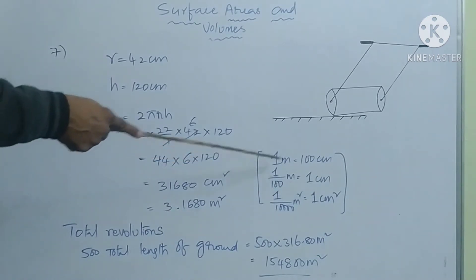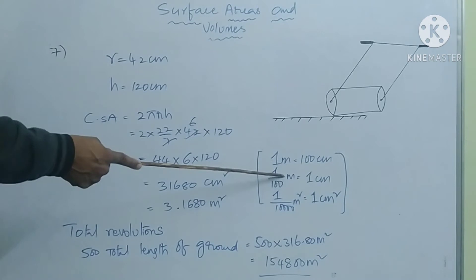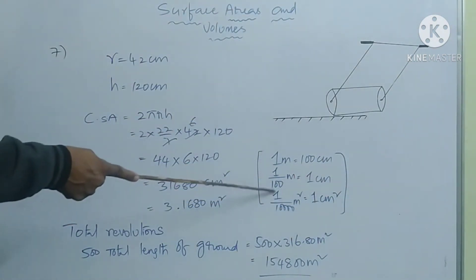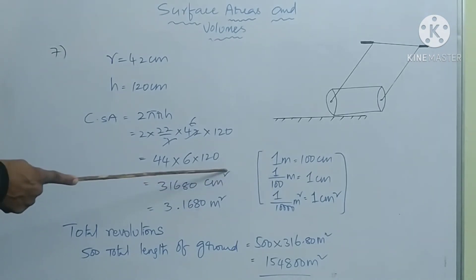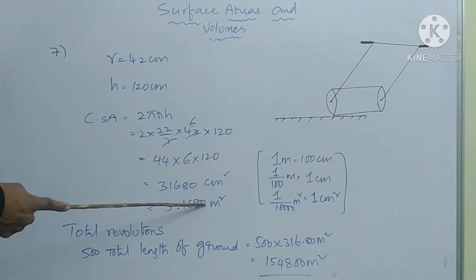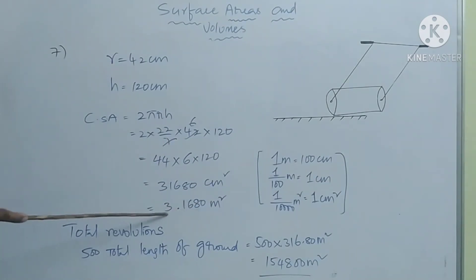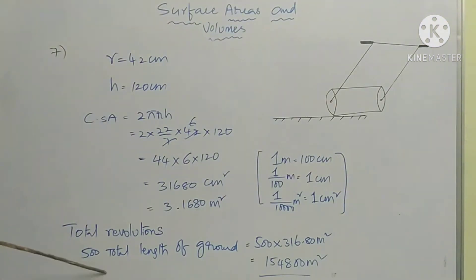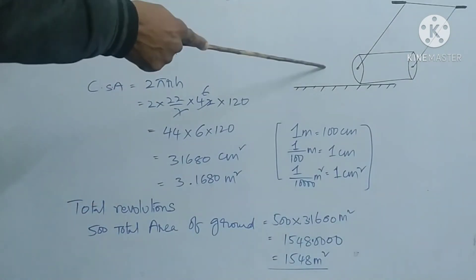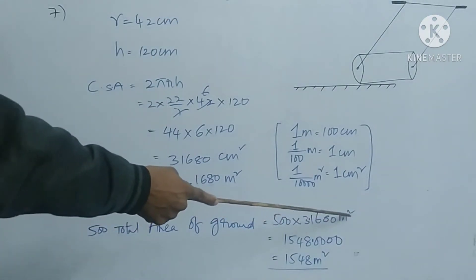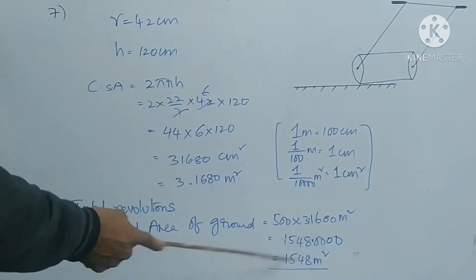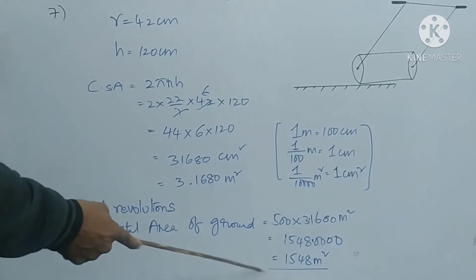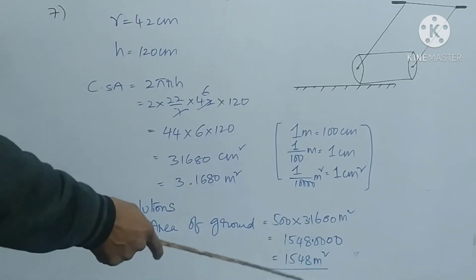Units are centimeter square; we need to change to meter square. One meter equals 100 centimeters, so one centimeter equals one by hundred meters. One centimeter square equals one by 10,000 meter square. Substituting and placing the decimal point after four places: 31,680 becomes 3.1680 meter square. Total revolutions is 500, so total area of playground equals 500 into 3.1680 = 1548 meter square.